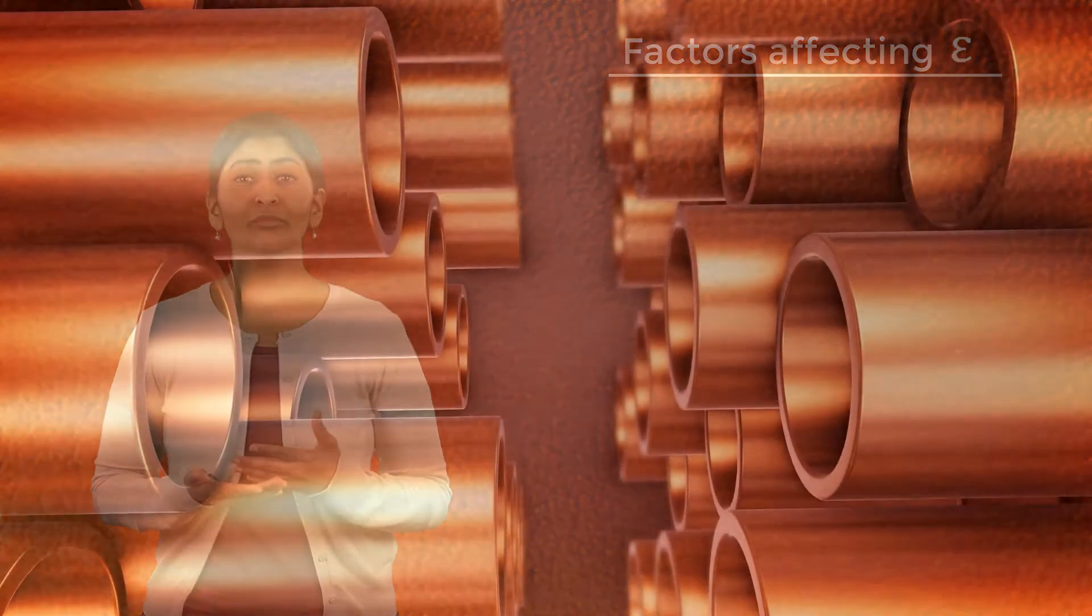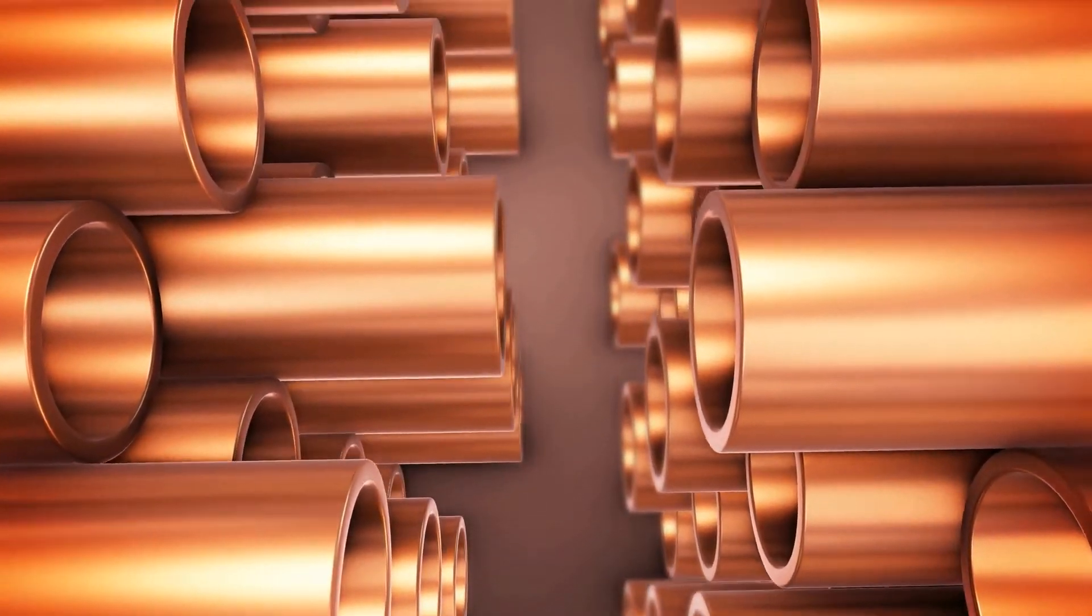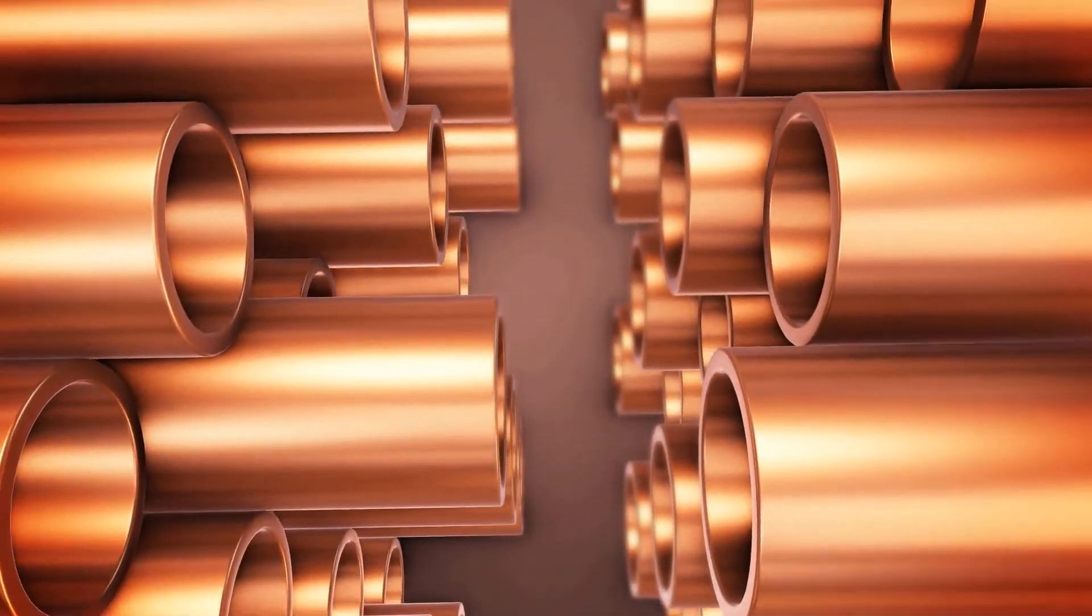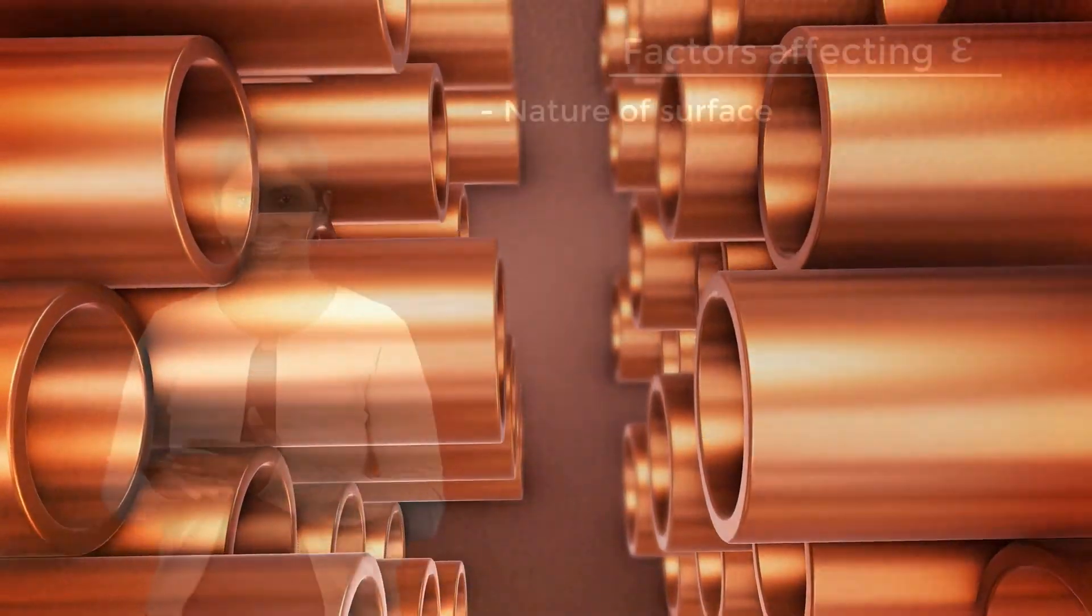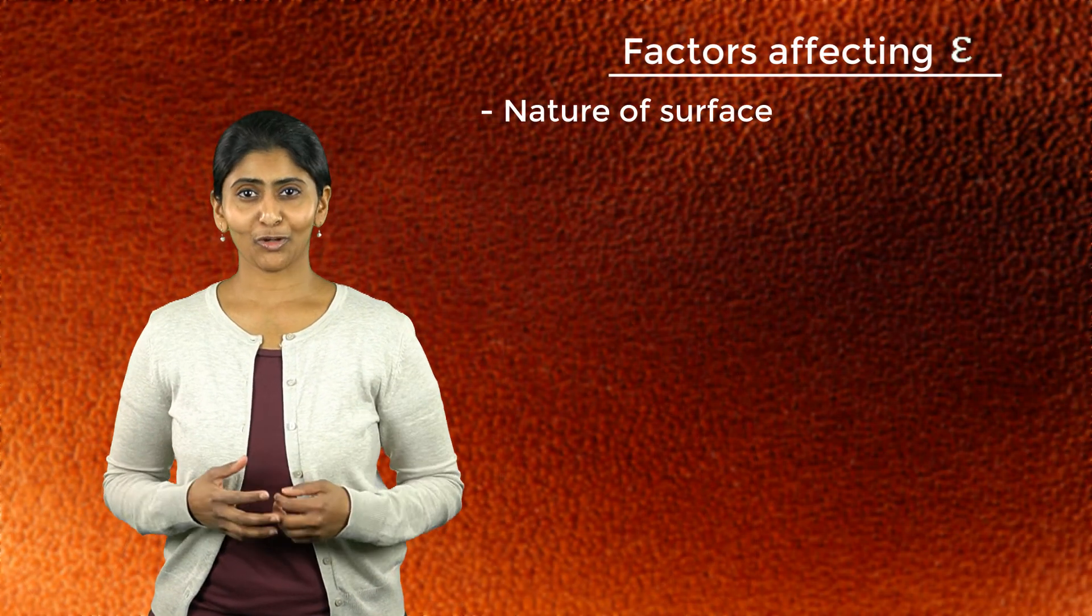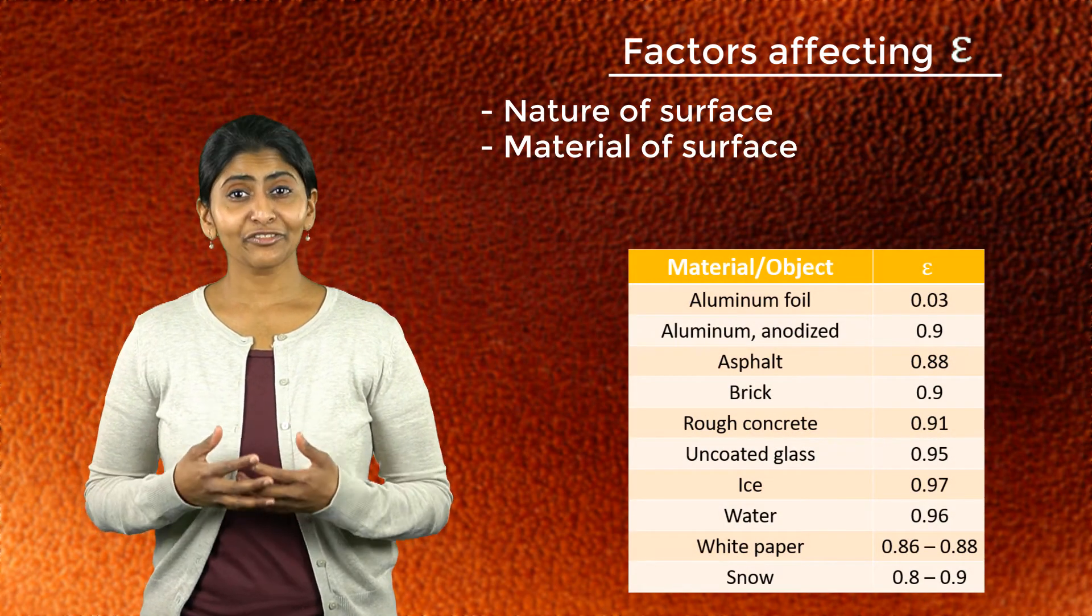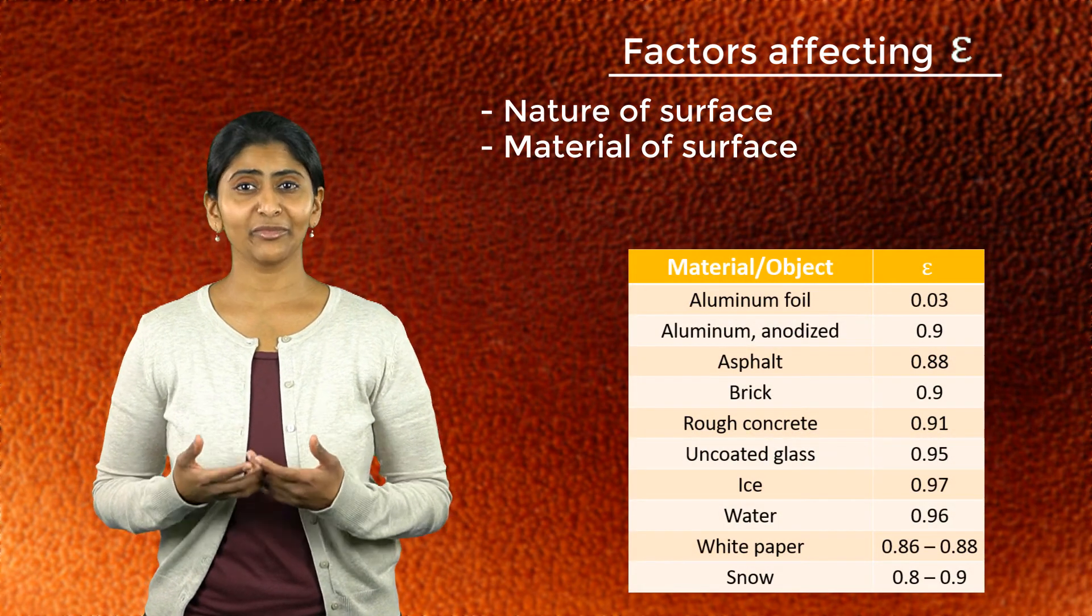Emissivity depends on a number of factors such as the material and nature of the surface, its temperature and the wavelength and direction of the radiation. For example, a polished mirror-like surface has a lower emissivity as compared to a rough surface since a polished surface reflects most of the radiation instead of absorbing it. From this table here, we see that different materials have different emissivity.